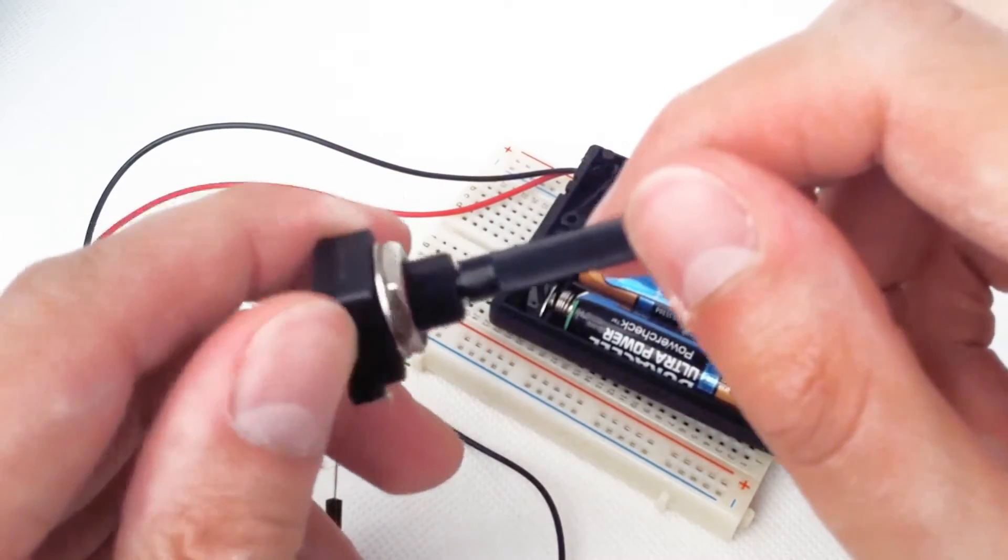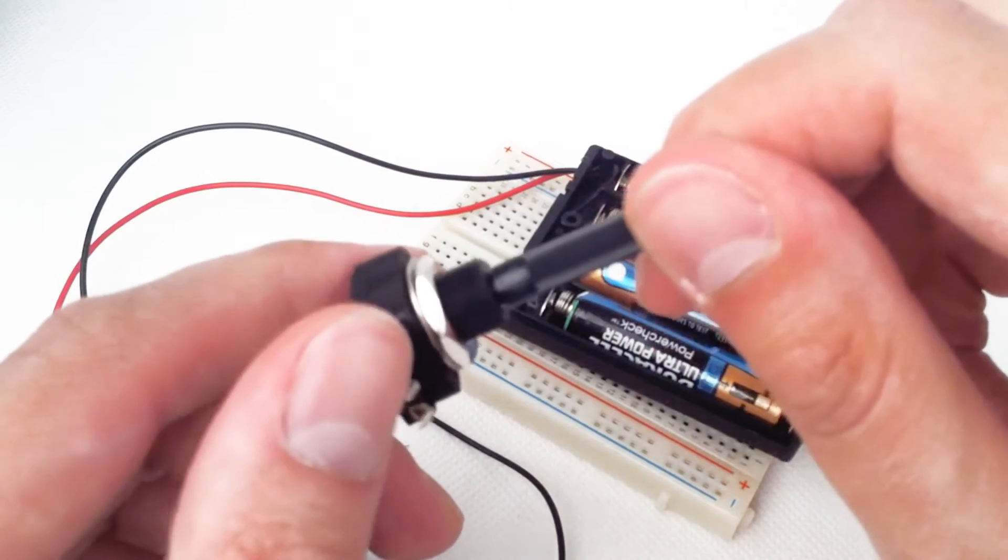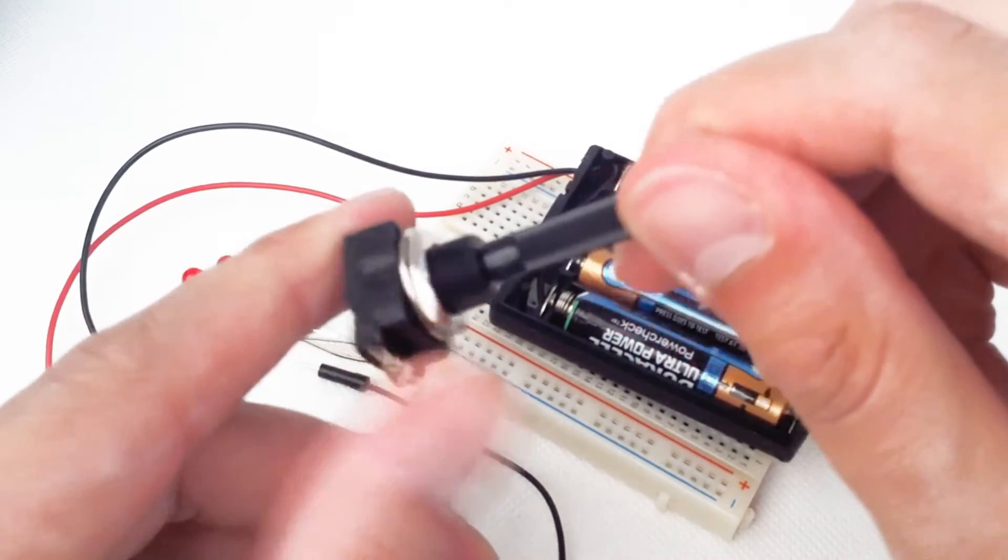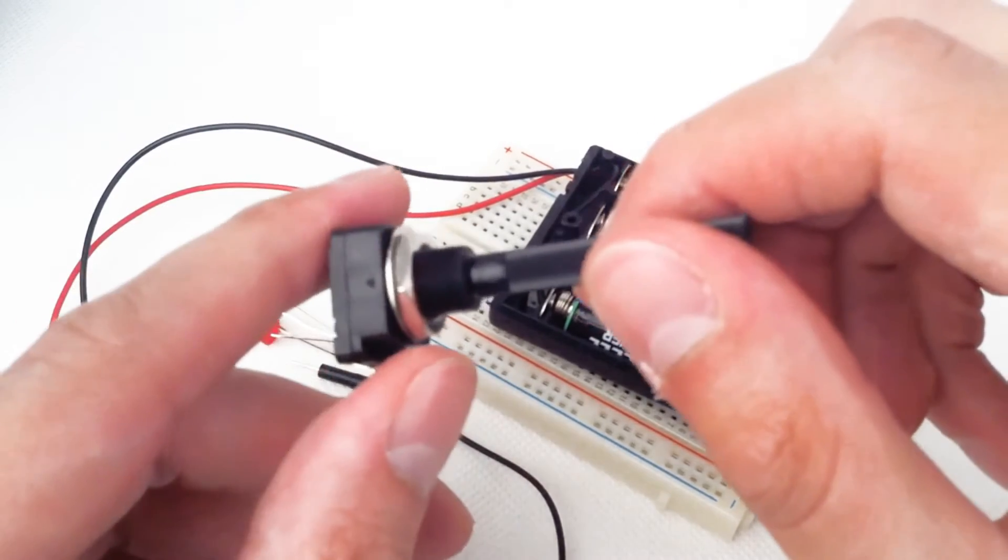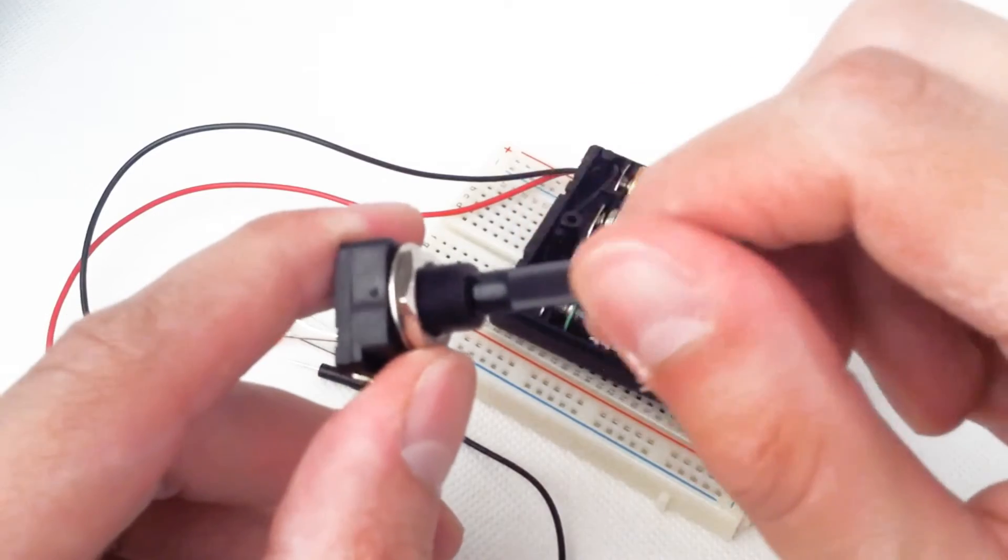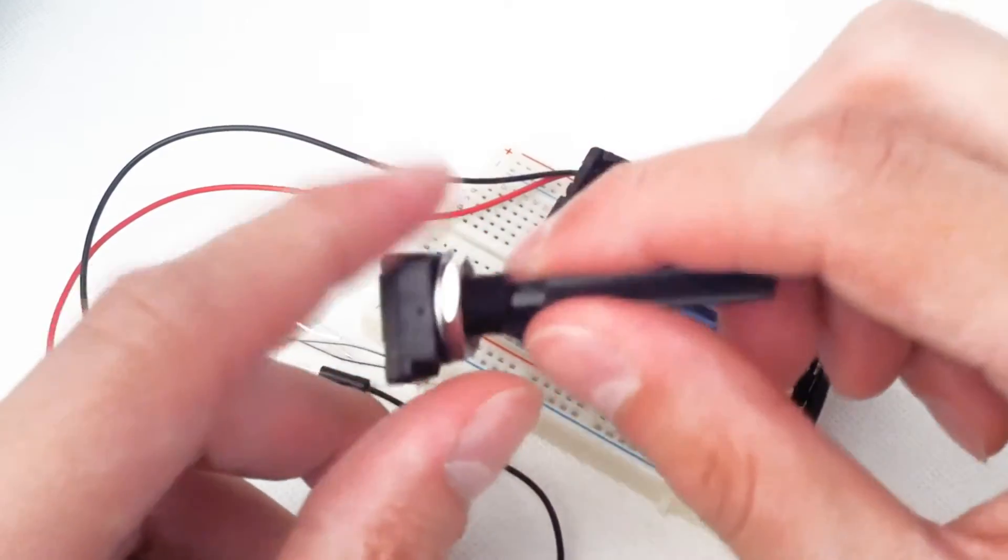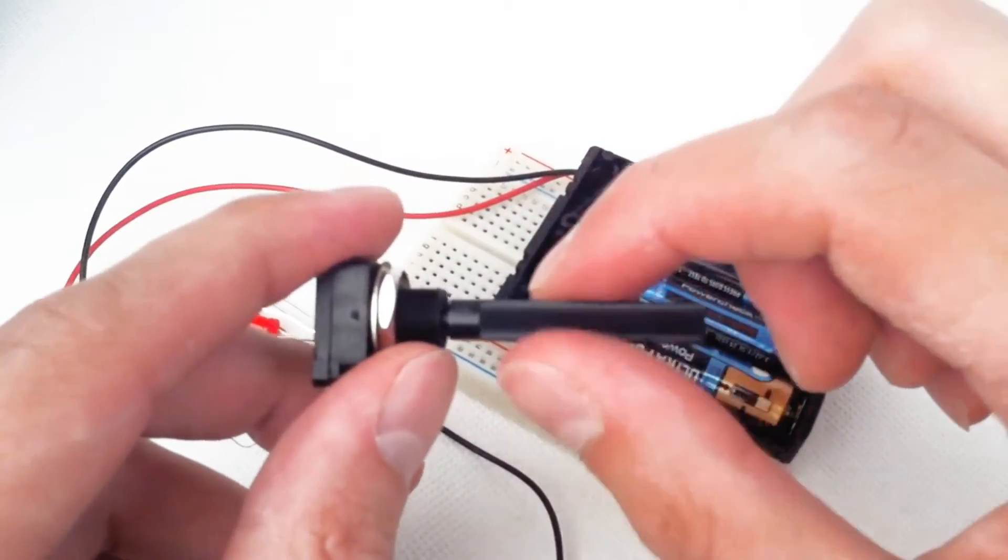Be careful though, because not all 10k potentiometers will be the same. Some will give a logarithmic, like a much larger increase on turning the dial. Others will be more sensitive and give a more incremental increase.